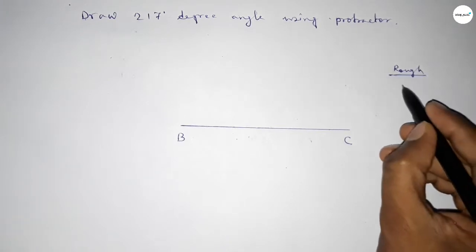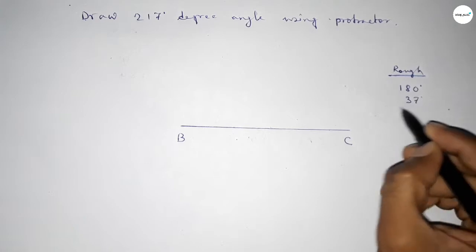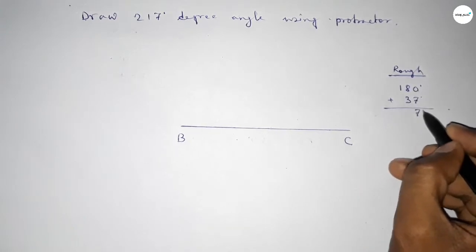So if we add 37 degree angle with 180 degree then we can get 217 degree. So this is 7, 11 and 2.